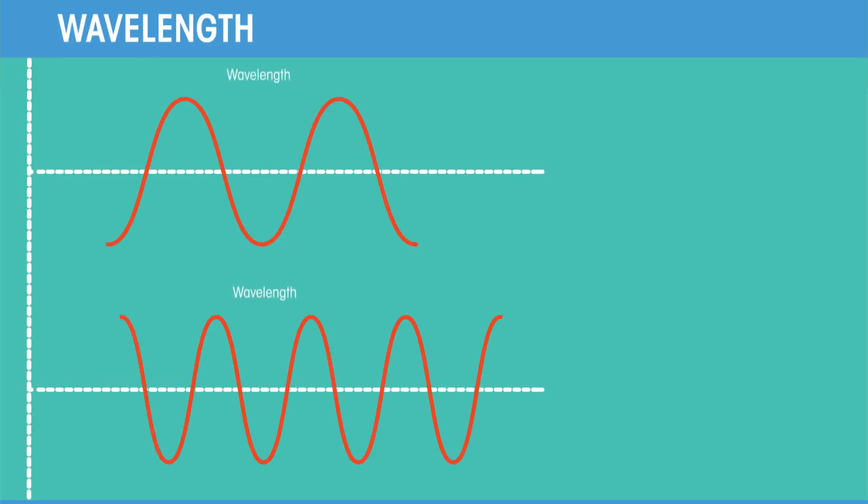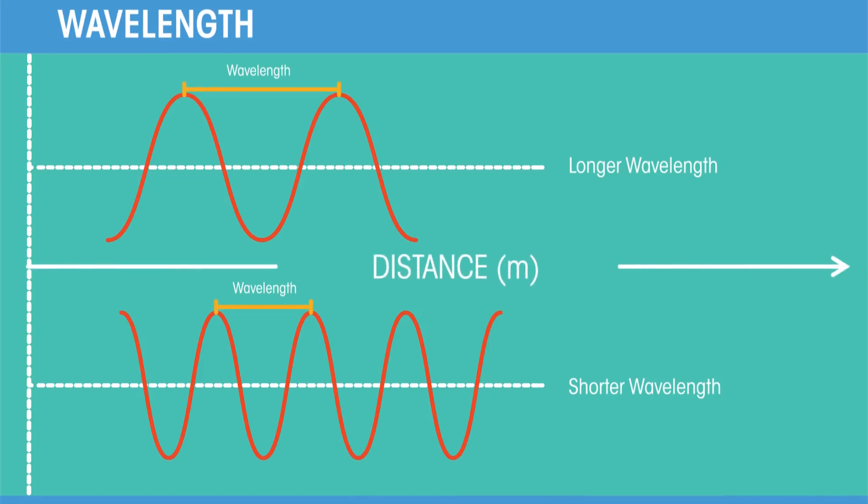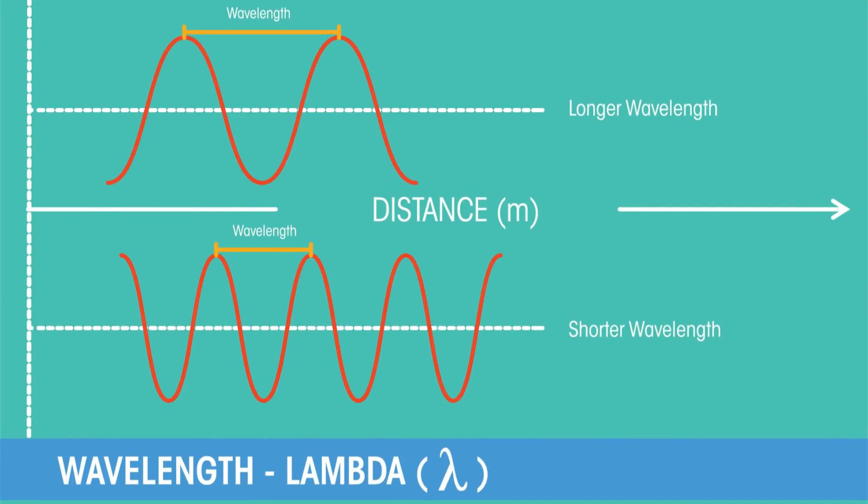Now for wavelength. The wavelength is the distance between a point on one wave and the same point on the next wave. For example, two peaks or two troughs. Wavelength is given the symbol lambda from the Greek letter and is usually measured in meters.